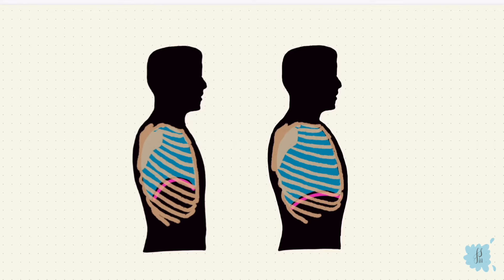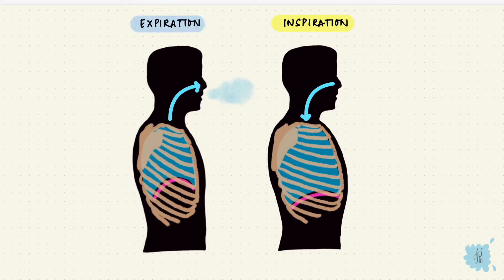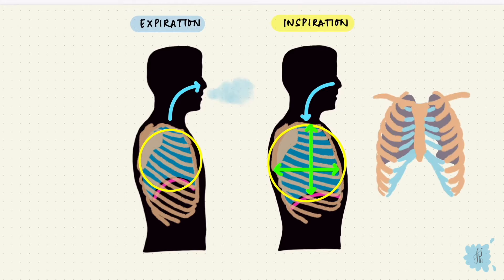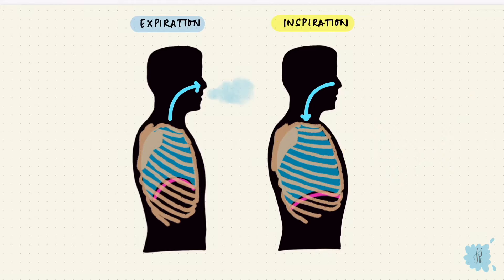The breathing cycle involves taking air into the lungs and breathing it out. This involves changes in the volume of the thoracic cavity, and that happens by changing its dimensions — vertically, anterior-posteriorly, and to some extent transversely. How does this happen?